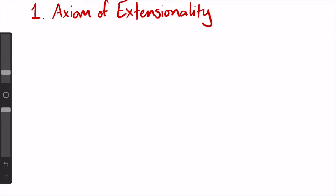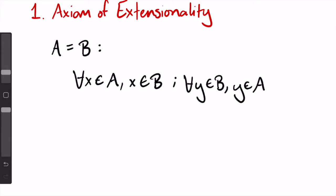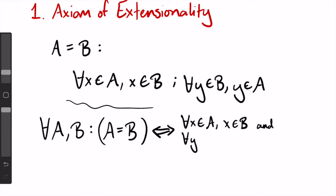So last week, our definition of a equals b was, for all x in a, x is in b, and for all y in b, y is in a. The axiom of extensionality says, for all a and b, a is equal to b, if and only if, for all x in a, x is in b, and for all y in b, y is in a. That is, I'm telling you as a rule that for any two sets, we can tell if those sets are equal using this definition.